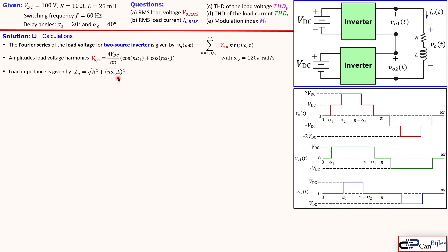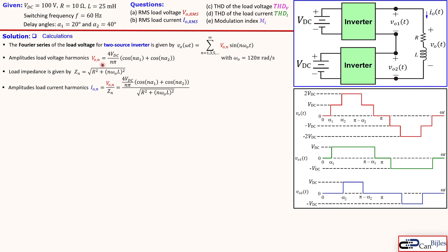The impedance of this circuit is the series combination of the resistor and inductor, determined by the resistor value, inductor value, switching frequency ω0, and harmonic number N. The amplitude of the load current harmonics is determined from Ohm's law — we know VON and we know the impedance — and these can be combined into one compact formula for the load current harmonics.